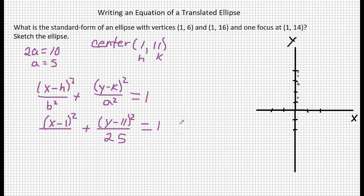Now how can we find b? Well, we know with an ellipse that c squared equals a squared minus b squared. a is 5, so a squared is 25. What's the value of c? Well, c is the distance from the center to the foci.